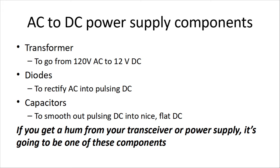Inside the power supply, you've got different components: a transformer to go from 120 volts AC to 12 volts DC; diodes to rectify the current from AC into pulsing DC; and capacitors to smooth out the pulsing into a nice flat 12-volt DC. If you're getting a hum from your transceiver or power supply, it's going to be from one of these components — the transformer, the diodes, or the capacitors.